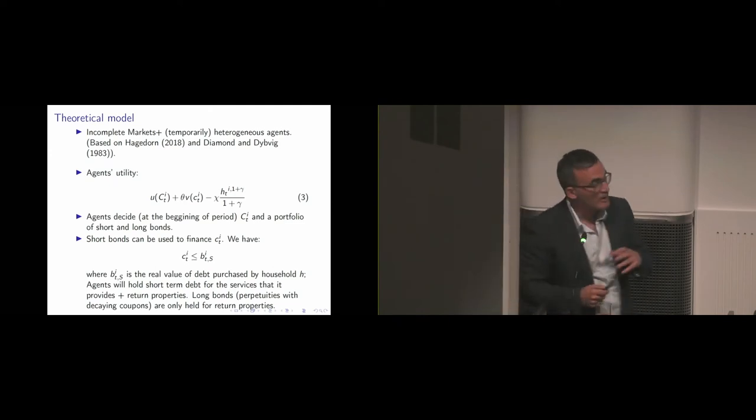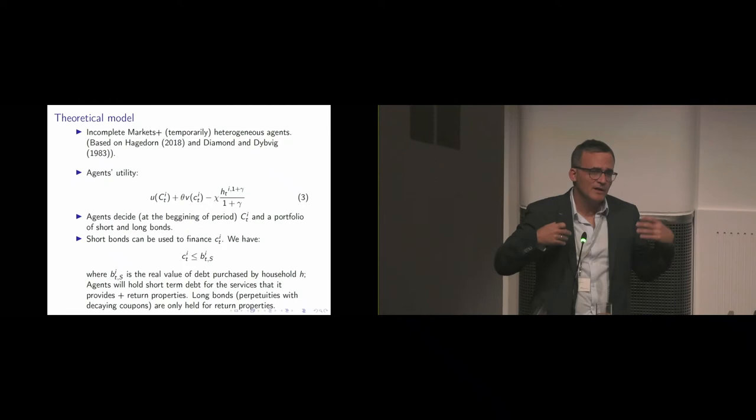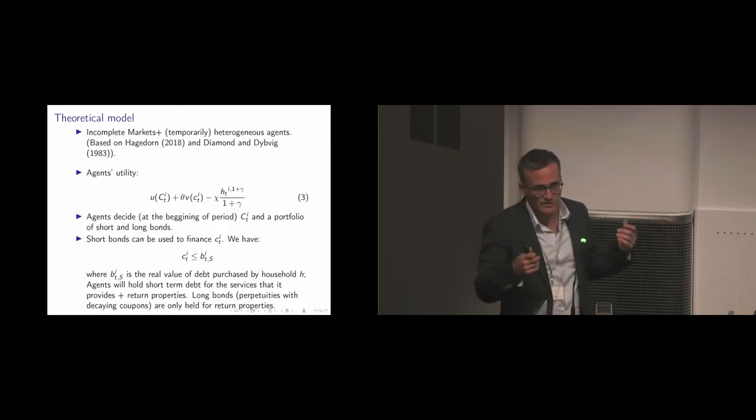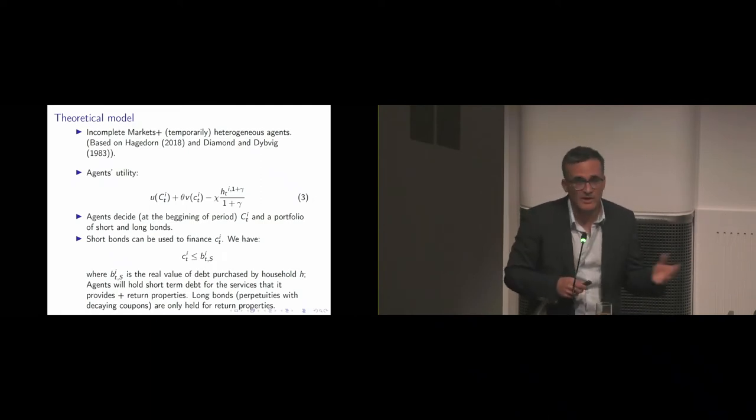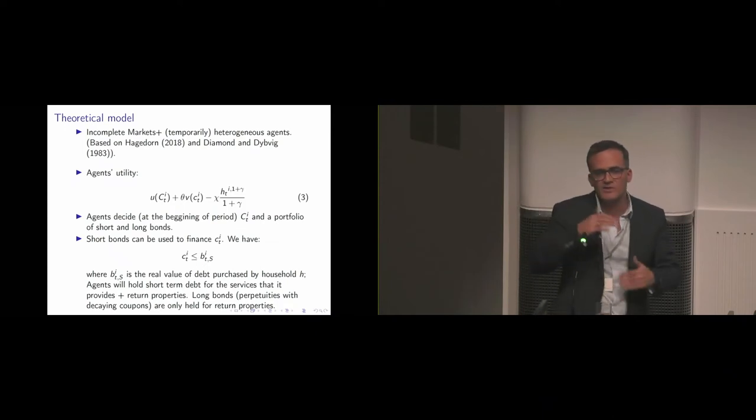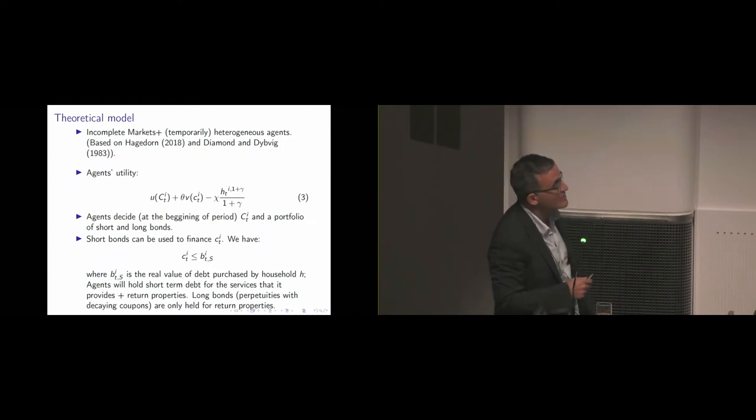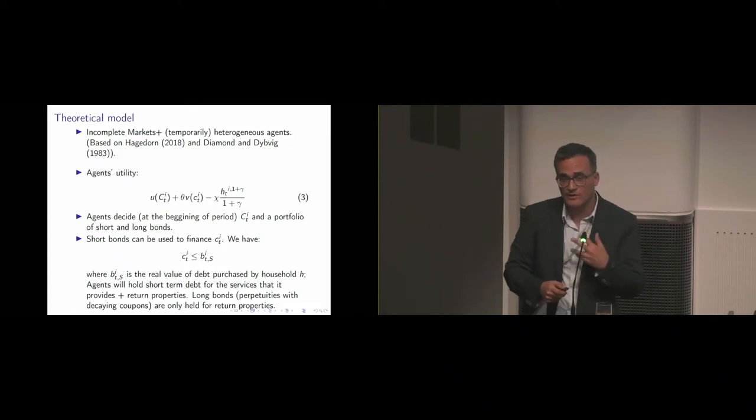So the theory. You have to turn to a theory which has, in which the bond quantity will make interest rates respond, which is not a standard neoclassical model. So you have to turn to theories where short bonds provide convenient services to investors and function like money. It follows very closely Hagedorn 2018, but here there's going to be two assets, short-term and long-term debt.